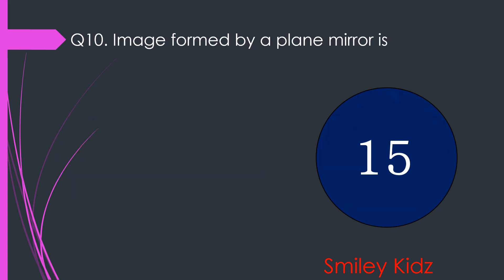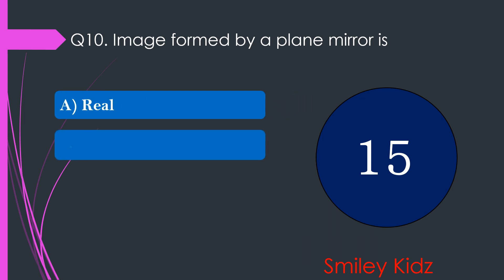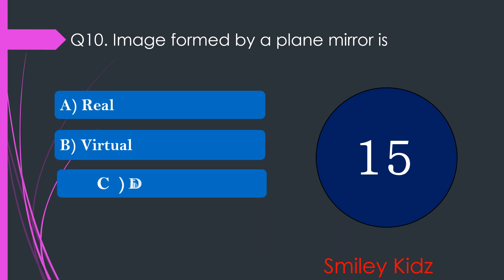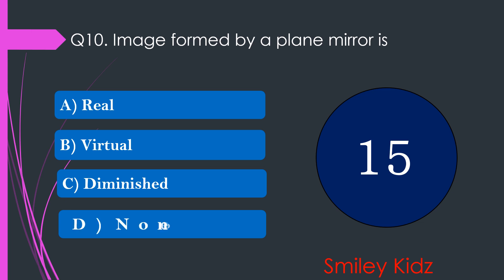Question number 10. The image formed by a plane mirror is dash. The options are A. Real, B. Virtual, C. Diminished, or D. None of these. Time starts now.